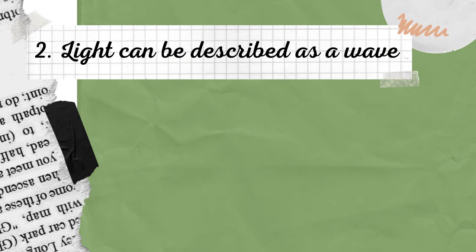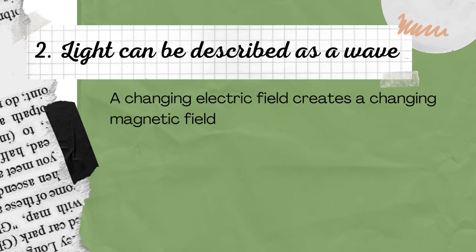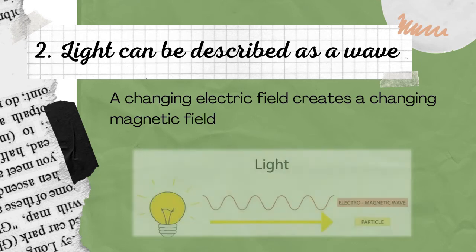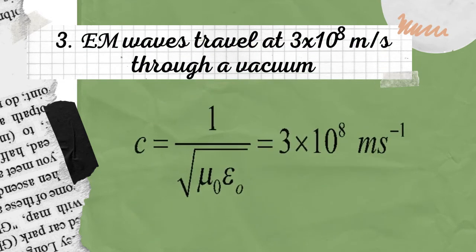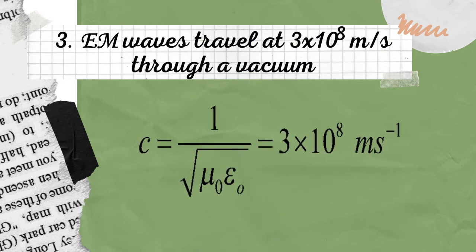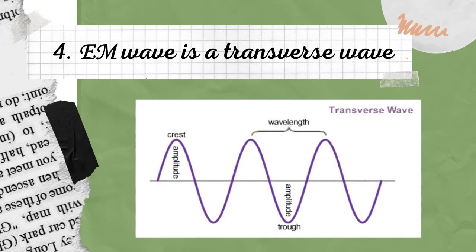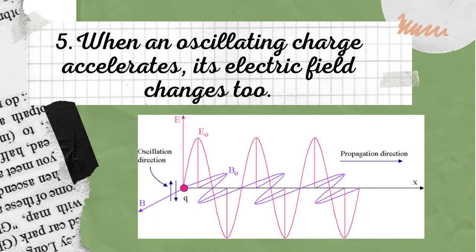Life can be described as a wave. A changing electric field creates a changing magnetic field, and this changing magnetic field then creates a changing electric field — and that's how electromagnetic waves are formed. EM waves travel at 3 × 10⁸ meters per second through a vacuum. EM waves are transverse waves. When an oscillating charge accelerates, its electric field changes too.